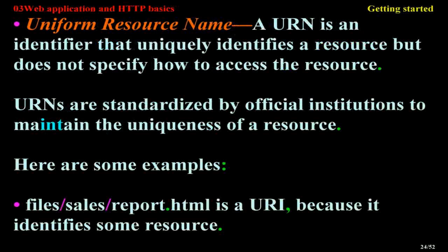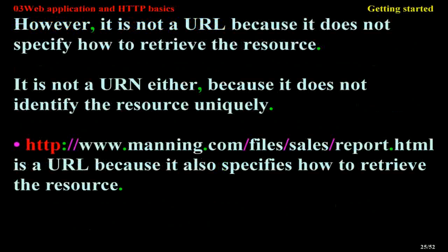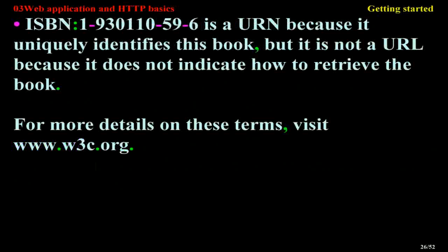Here are some examples: 'files/SalesReport.html' is a URI because it identifies some resource; however, it is not a URL because it does not specify how to retrieve the resource, and it is not a URN because it does not identify the resource uniquely. 'http://manning.com/files/SalesReport.html' is a URL because it also specifies how to retrieve the resource. 'ISBN 1-930110-59-6' is a URN because it uniquely identifies a book, but it is not a URL because it does not indicate how to retrieve the book. For more details on these terms, visit www.w3c.org.